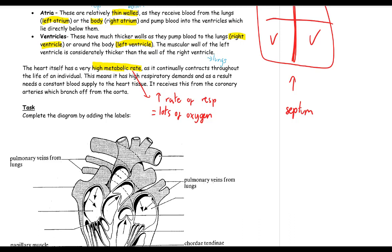The heart receives its constant blood supply from the coronary arteries, which branch off from the aorta. It makes sense that it comes from the aorta because the aorta is about to deliver oxygenated blood to the rest of the body.